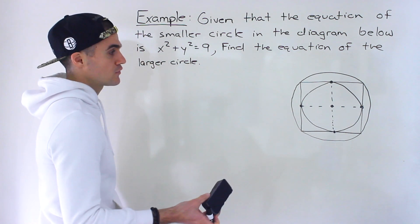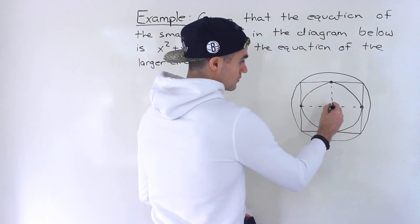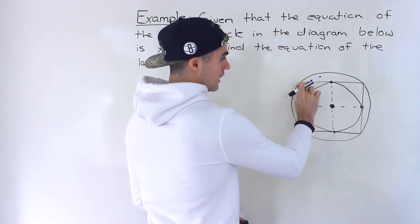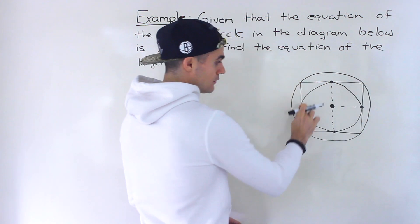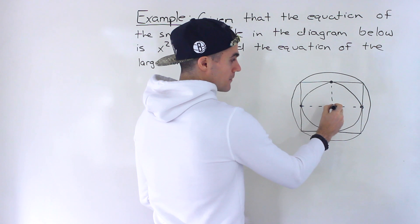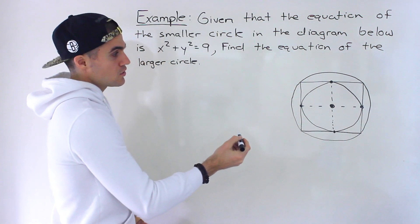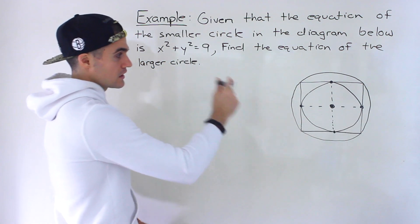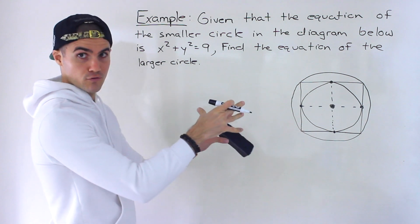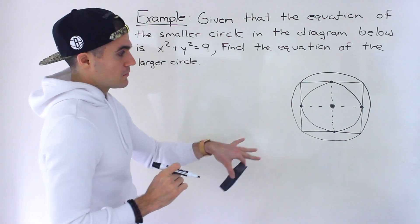Because this is the center of the circle, and it's the halfway point of both the length and the width of the square, this is also going to be the midpoint of the square. It's going to be the midpoint of the larger circle as well. So this midpoint is the same — it's the center for all three shapes.